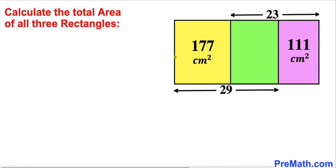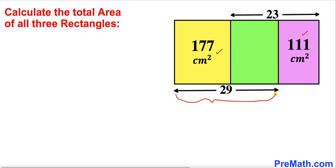Welcome to pre-math. In this video we have been given a big rectangle that consists of three individual rectangles, such that the area of the yellow rectangle is 177 centimeter square, and the area of the purple rectangle is 111 centimeter square. Moreover, this distance is 29 centimeter.